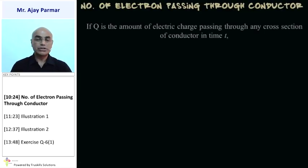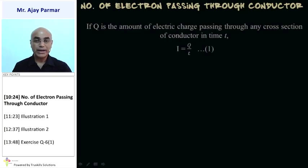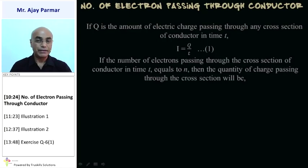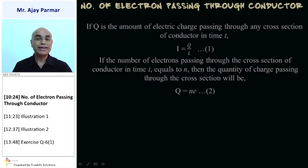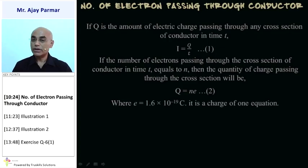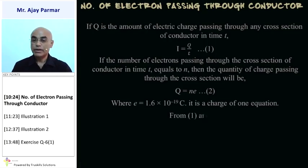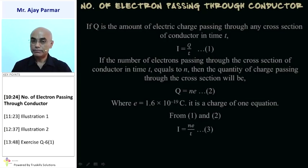For the number of electrons passing through a cross-section: if Q is the amount of electric charge passing in time T, then I = Q/T. If the number of electrons passing is N in time T, then the quantity of charge is Q = N × E, where E = 1.6 × 10⁻¹⁹ Coulomb. Combining both equations: I = NE/T, or N = IT/E.